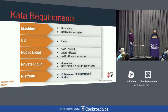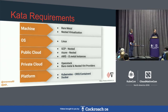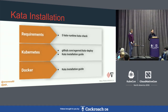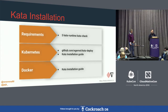Requirements for Kata containers: either bare metal or nested virtualization, running on Linux. You can use public cloud providers like GCP or Azure with nested virtualization support. With AWS, you can use I3 metal instances. For private cloud, you can run it with OpenStack or anything bare metal. For orchestration, use Kubernetes with CRI-O or containerd, or plain Docker. After installing Kata, run the 'kata-runtime kata-check' utility to verify compatibility. You can use the kata-deploy utility on GitHub to automatically install Kata on all your nodes.